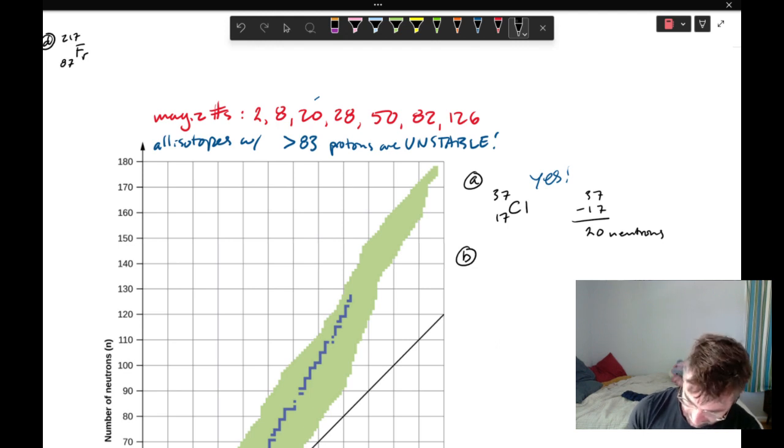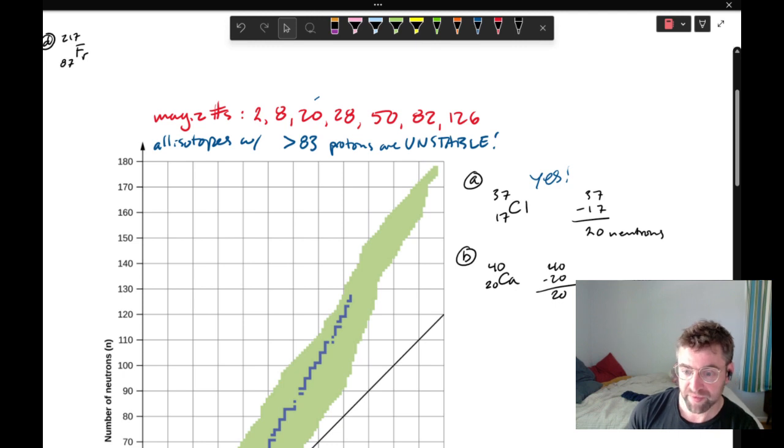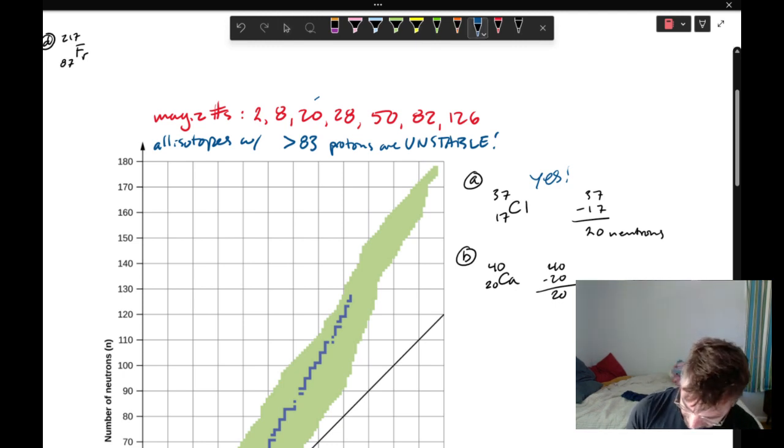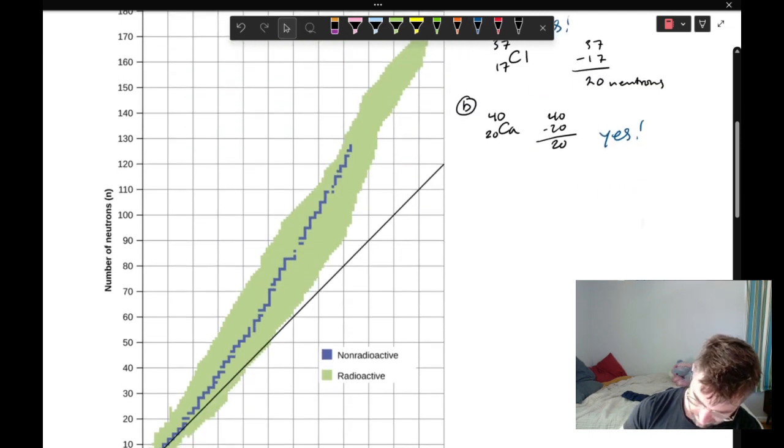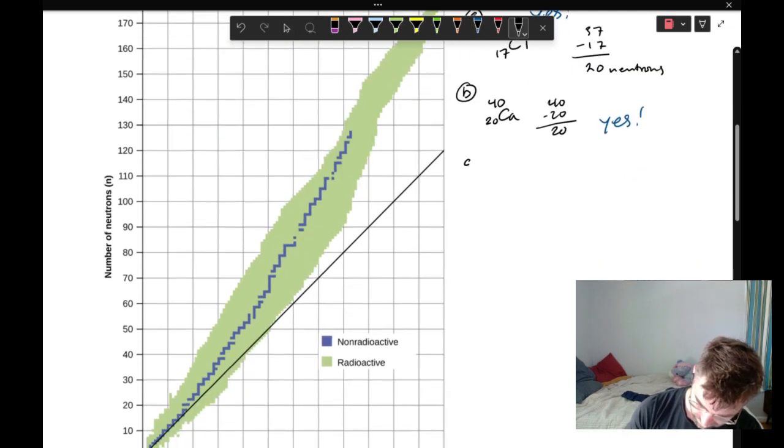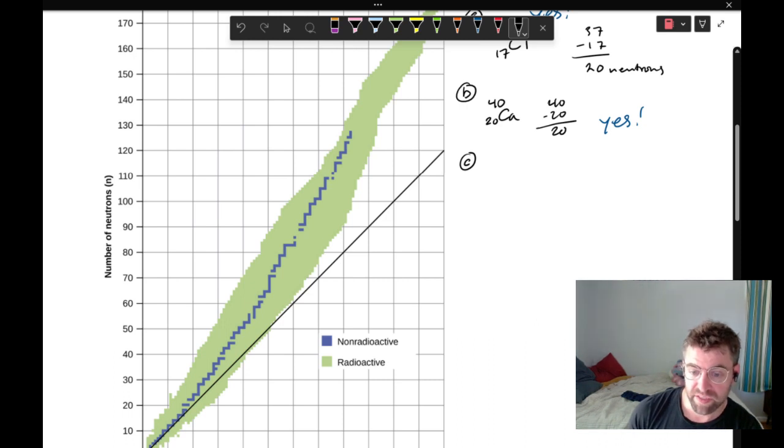For B, we have calcium-40. Checking our periodic table. Calcium is the 20th element on the periodic table. 40 minus 20 is 20. So we have 20 neutrons. This is also a magic number. Yes, it's stable.